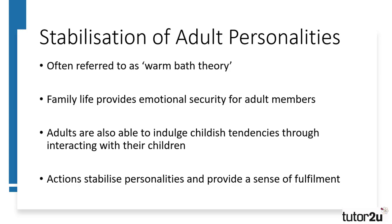A second function Parsons described was the stabilisation of adult personalities. This is often referred to as the warm bath theory, an idea that for the males, coming home to the family was the equivalent of getting into a warm bath, capable of soothing and washing away the worries of work. Family life provided a form of emotional security for its adult members, allowing worries to be addressed within the comfort of home, allowing people to function normally in the public sphere. Adults could also indulge their childish tendencies through playing with their children, giving them a sense of fulfilment through play, helping to stabilise their personalities in contrast to the stresses of adult life.